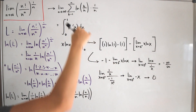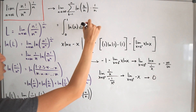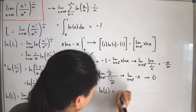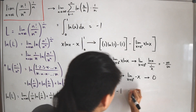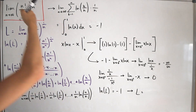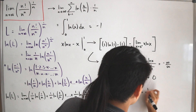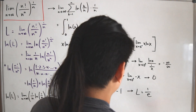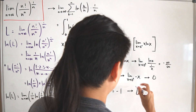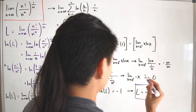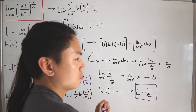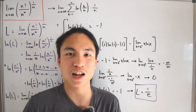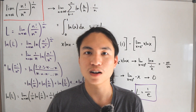Therefore, we have negative 1 minus 0, leaving negative 1 equal to this definite integral. So ln(L) equals negative 1. Taking e to the power of both sides, L — which equals our original limit — equals 1 over e. That completes the evaluation of this factorial limit. If you want to check out the other video I mentioned, the link is in the description below.